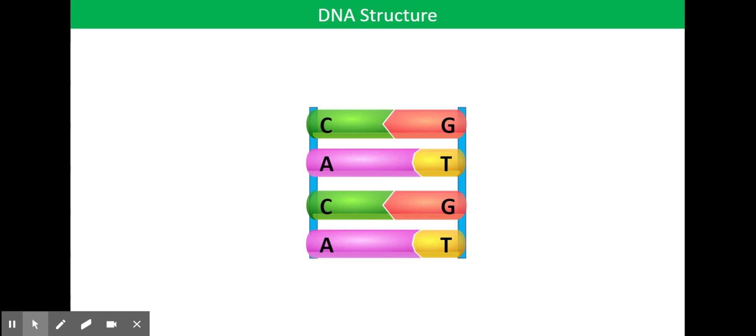So the double helix contains bases. There are four bases. You've got cytosine, which is symbolized there as a C, which always pairs up with guanine, G. There's adenine, which always base pairs with thymine.